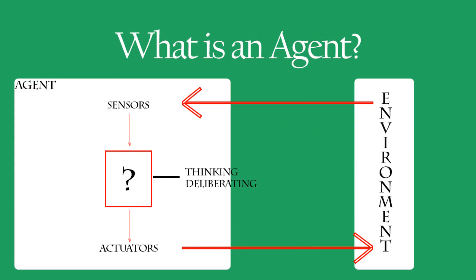An agent runs in cycles. First, it perceives an environment. Second, it thinks about the environment. And third, it acts on that environment. An agent's behavior is described by an agent's function that maps any given percept sequence to an action. Percepts refer to the agent's perceptual inputs at any given instant, and an agent's percept sequence is the complete history of everything the agent has ever perceived.